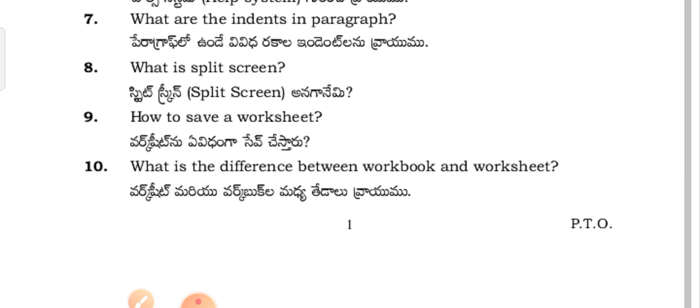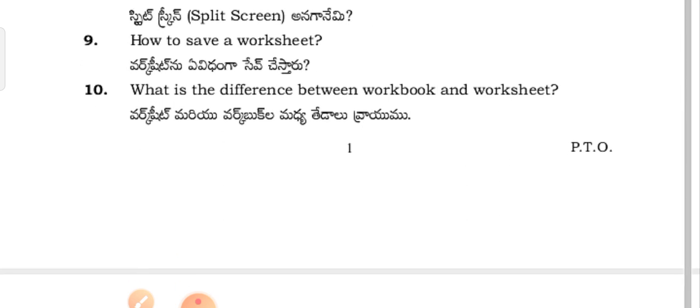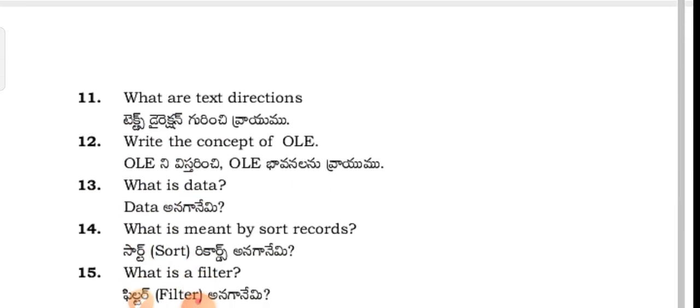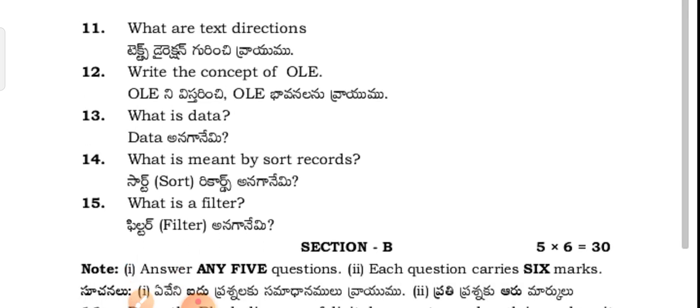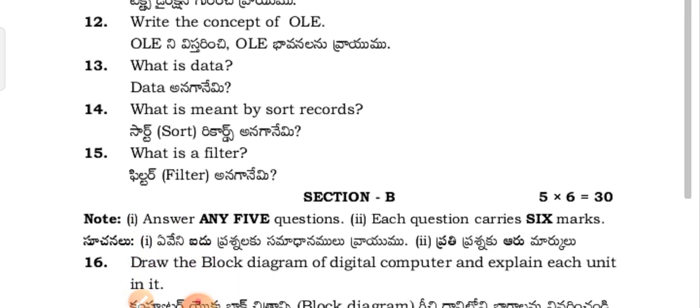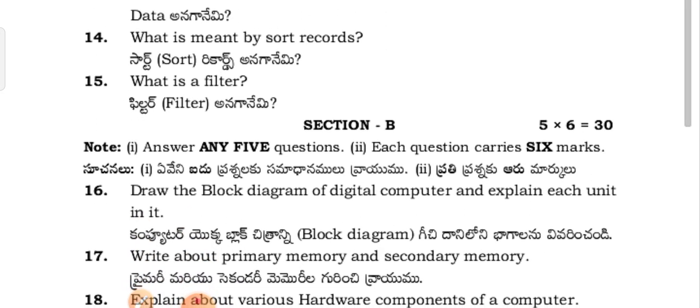Continuing Section A questions: What is split screen? How to save a worksheet? What is the difference between a workbook and a worksheet? What are the text directions? What are the concepts of OLE (Object Linking and Embedding)? What is data? What is meant by sort records? What is a filter?